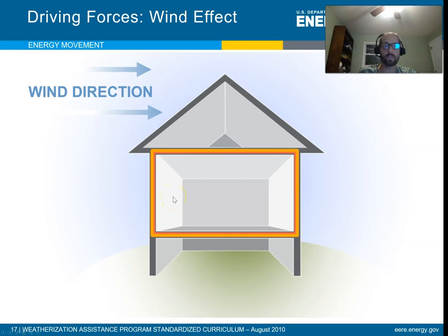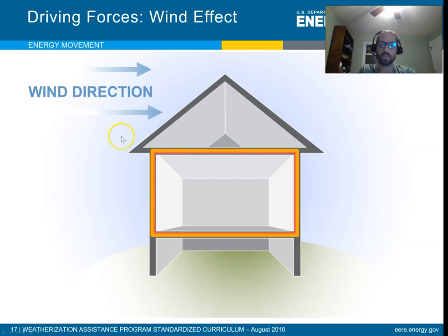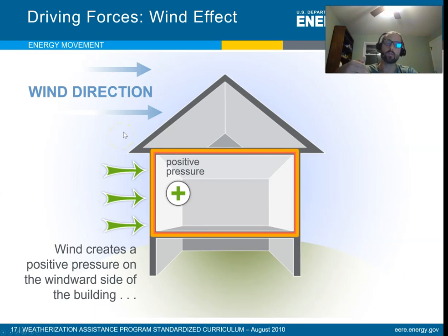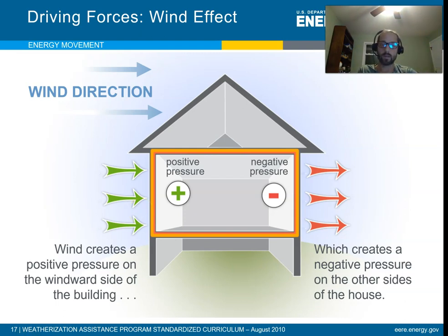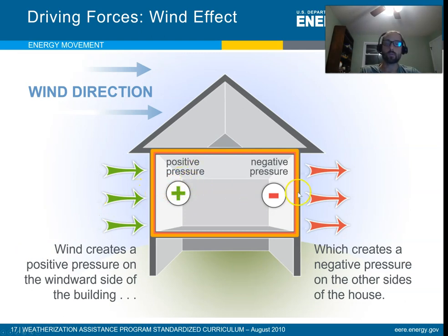First, the wind effect. When you have wind blowing primarily from one direction — in this case, left to right — it will cause a high pressure zone on the left side, or the windward side of the building. The leeward side will have a negative pressure zone. The relationship between pressure and airflow is that air flows from areas of higher pressure to areas of lower pressure, so this positive pressure causes air to move inside and outside the house.